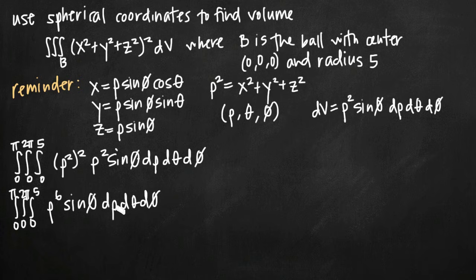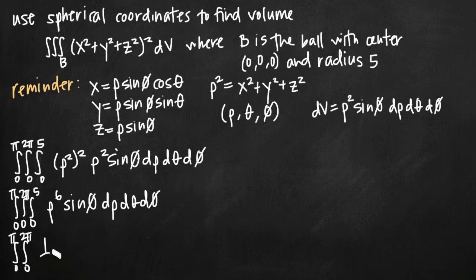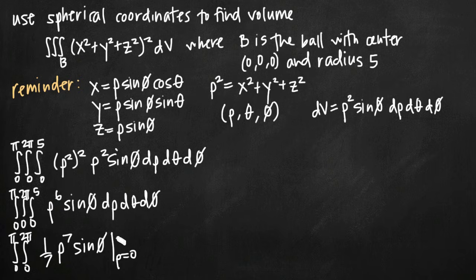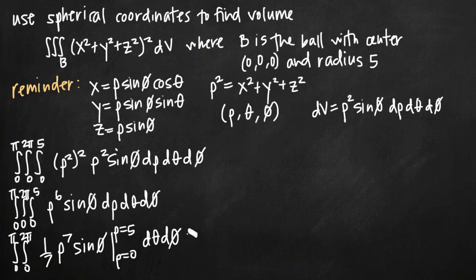Integrating first with respect to rho, we treat phi as a constant, so sine of phi becomes a constant coefficient on the rho to the sixth term. Using the power rule, we get one-seventh rho to the seventh times sine of phi, evaluated from rho equals 0 to rho equals 5. I write rho equals 0 and rho equals 5 explicitly so I remember I'm plugging in for rho and not for phi.